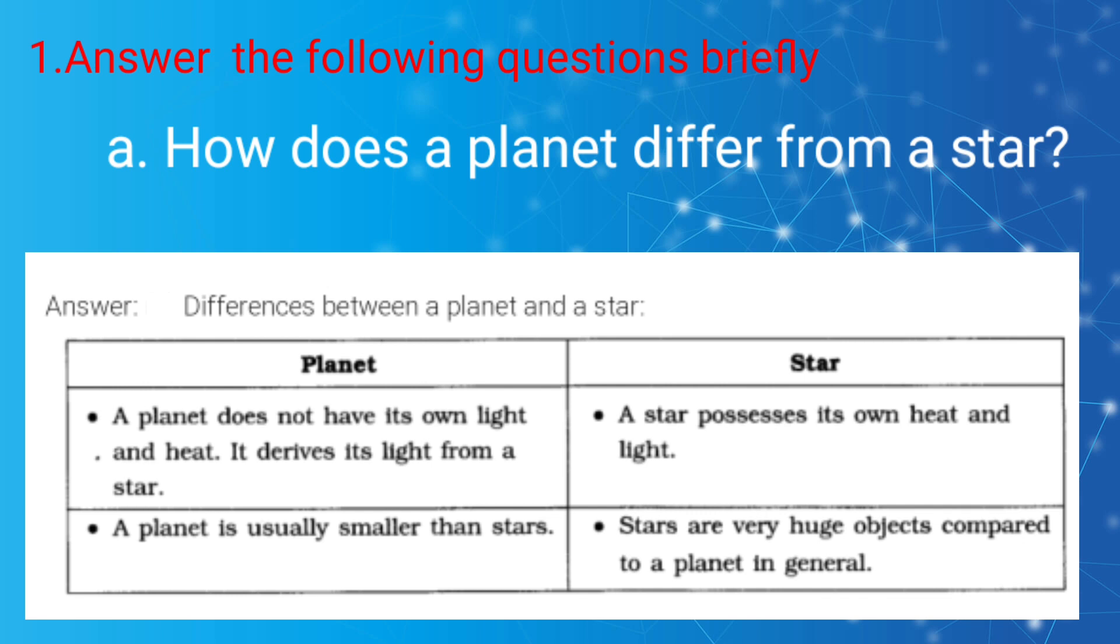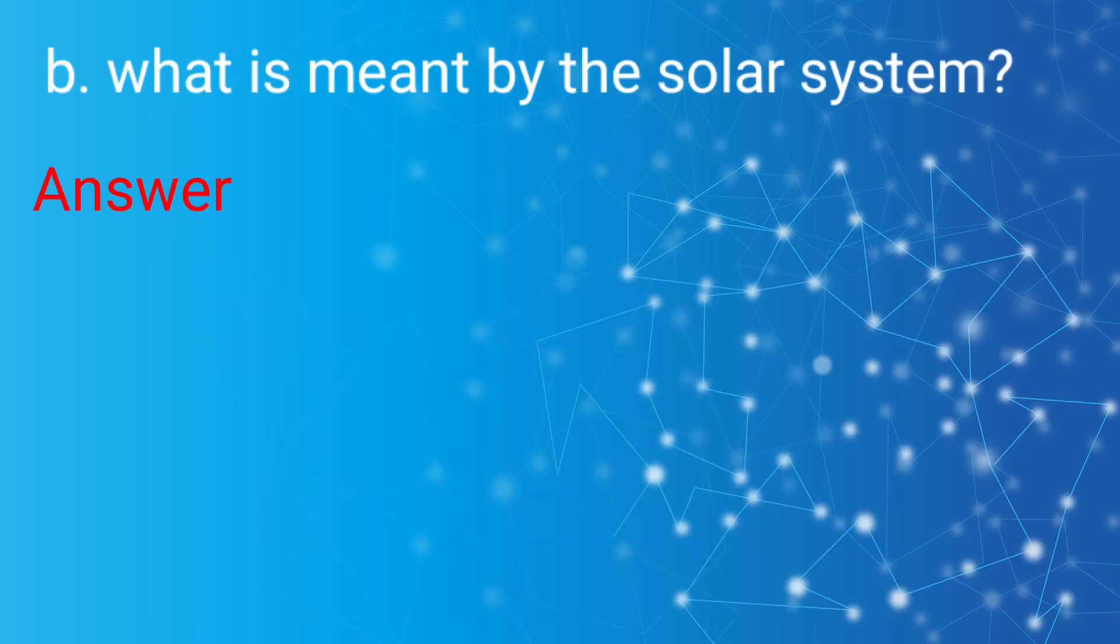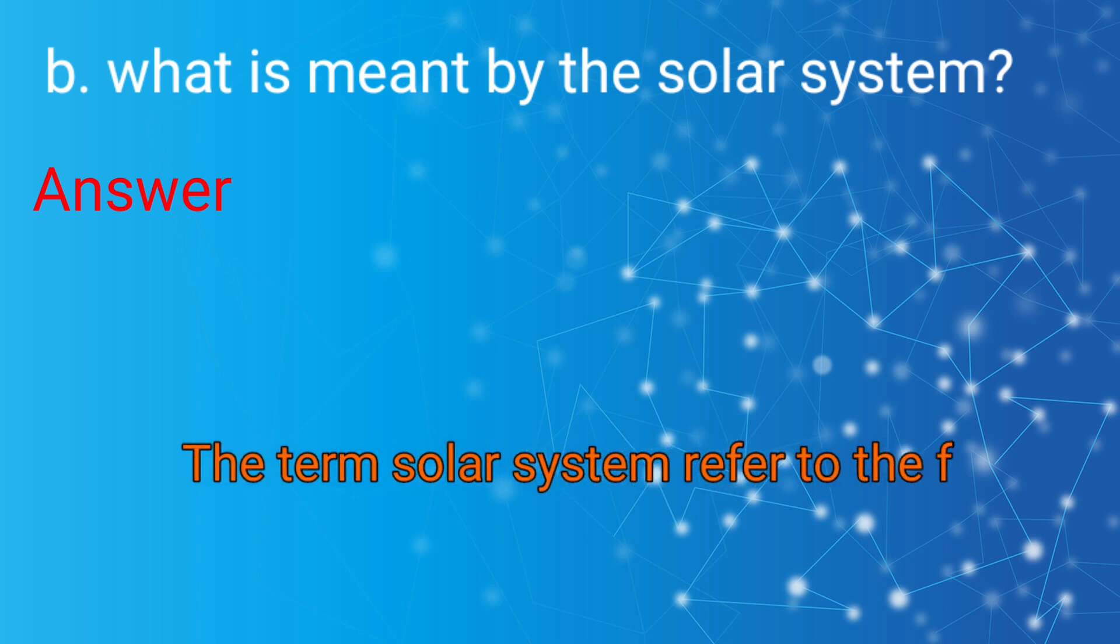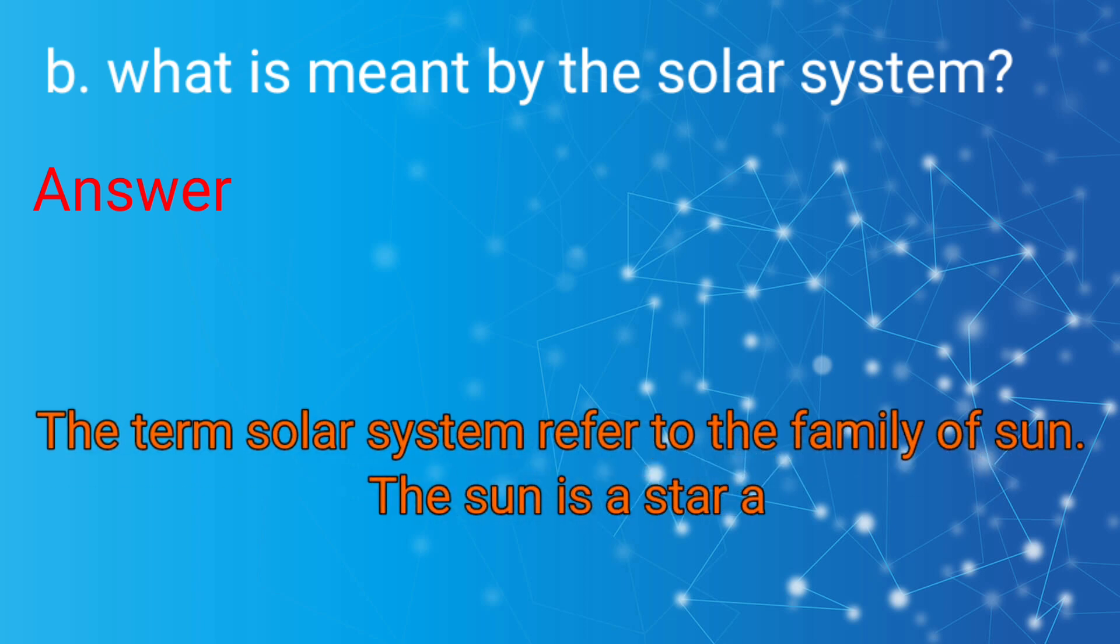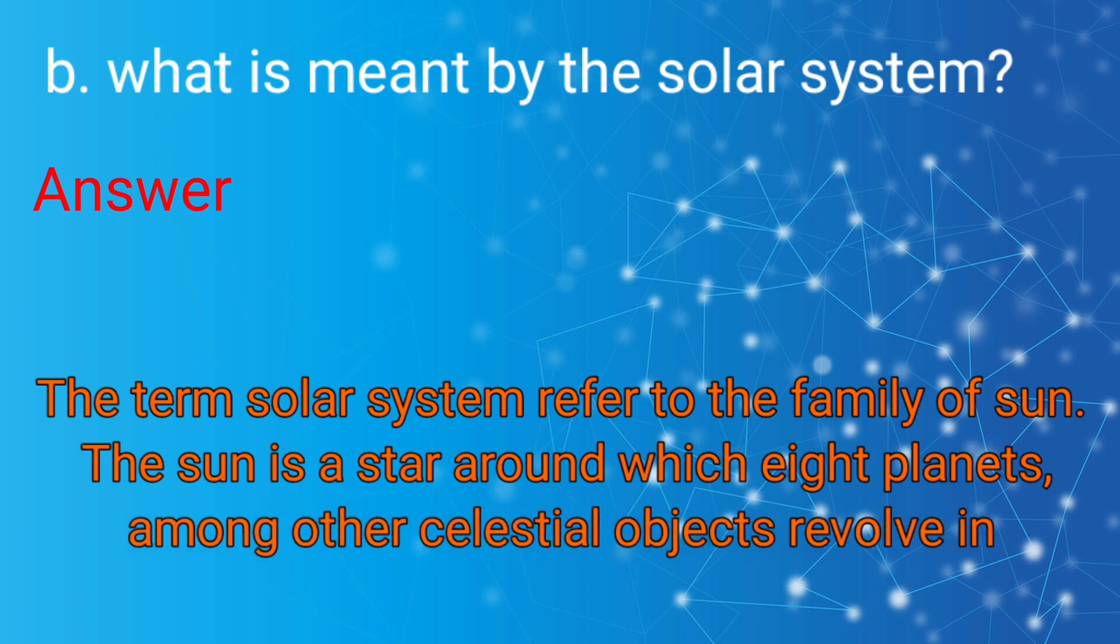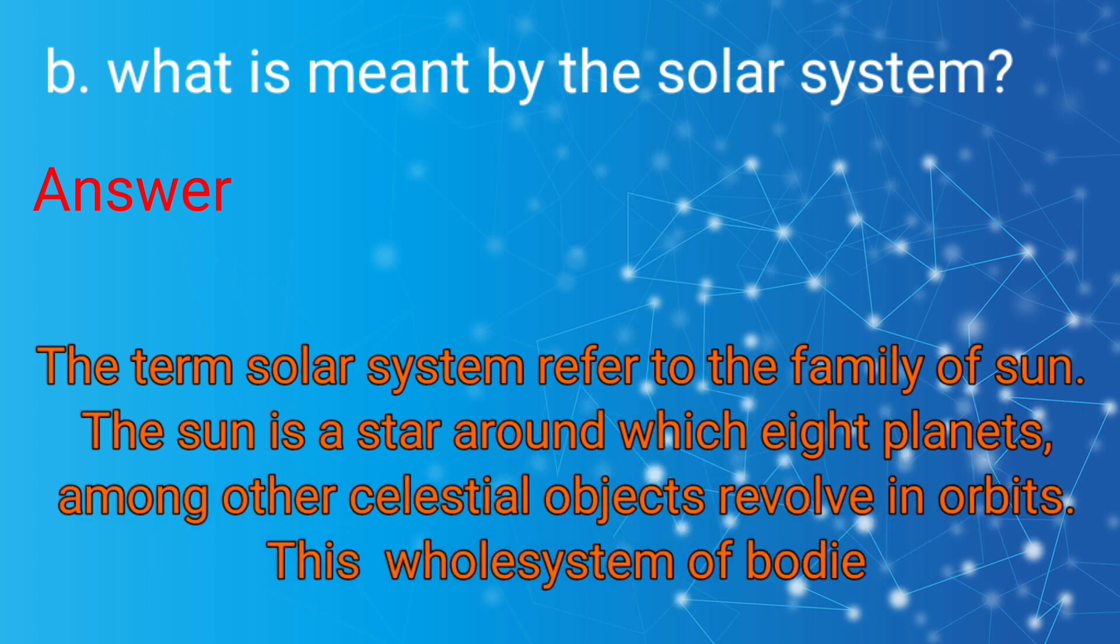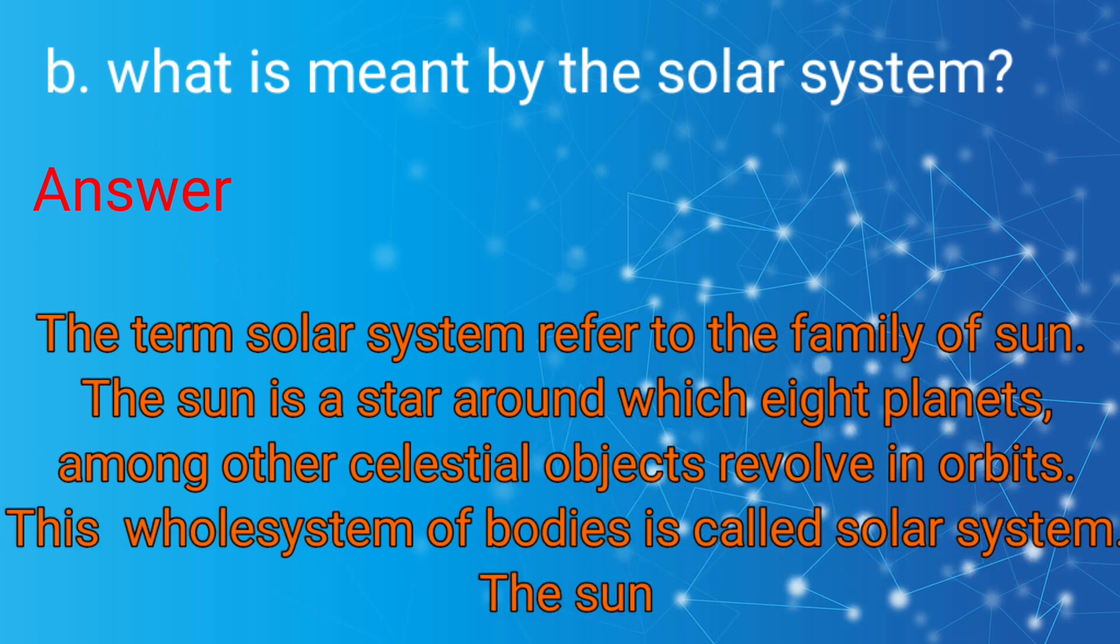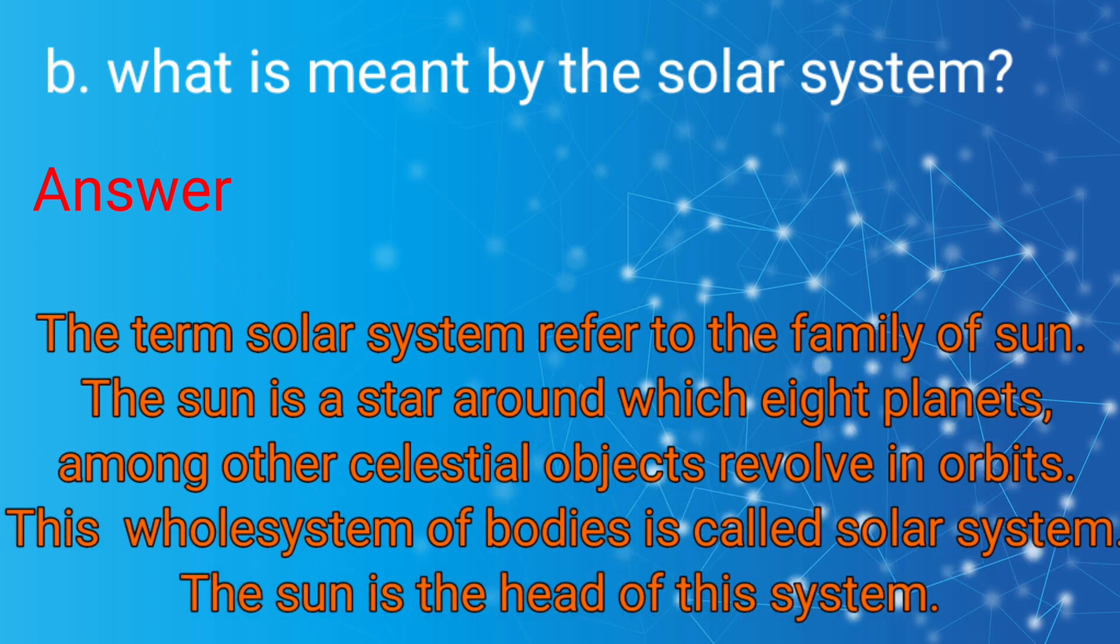Stars are very huge objects compared to a planet in general. B: What is meant by the solar system? Answer: The term solar system refers to the family of the Sun. The Sun is a star around which eight planets, among other celestial objects, revolve in orbit. This whole system of bodies is called the solar system. The Sun is the head of the solar system.